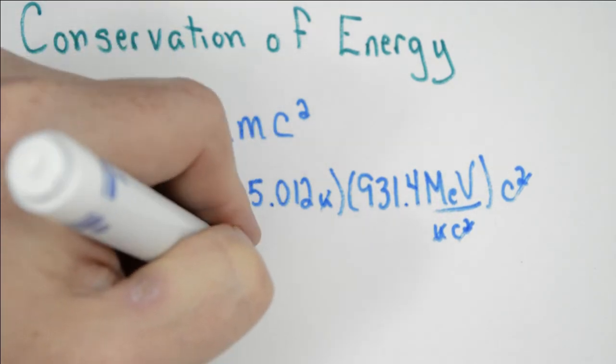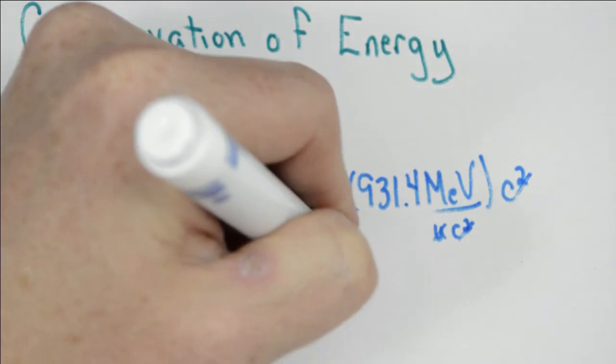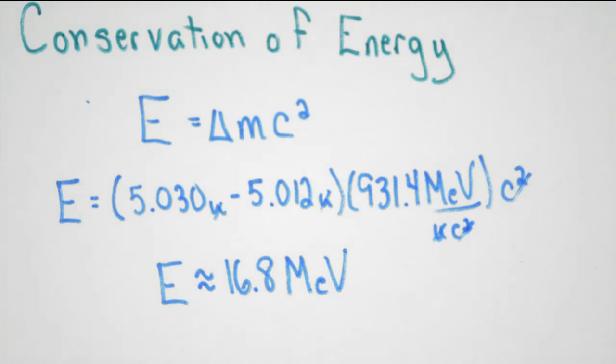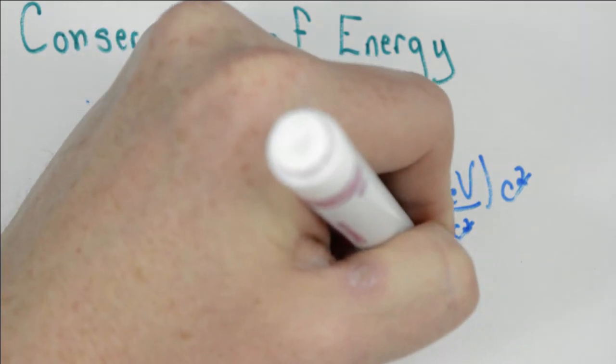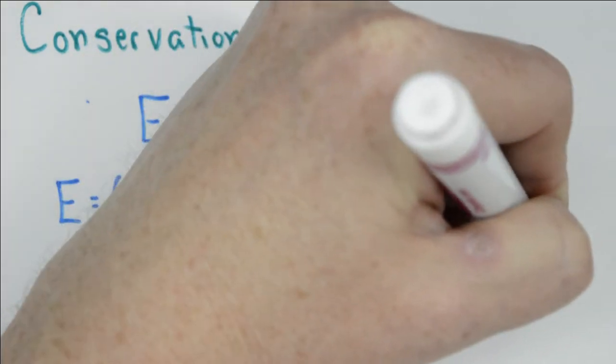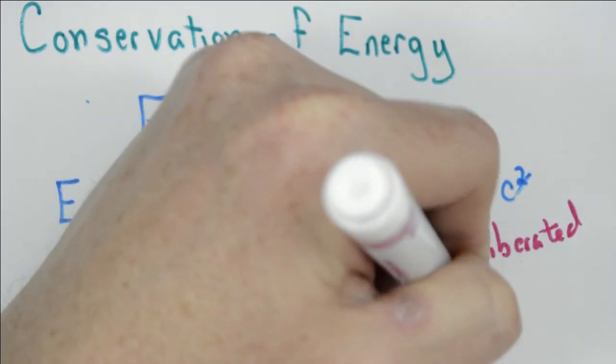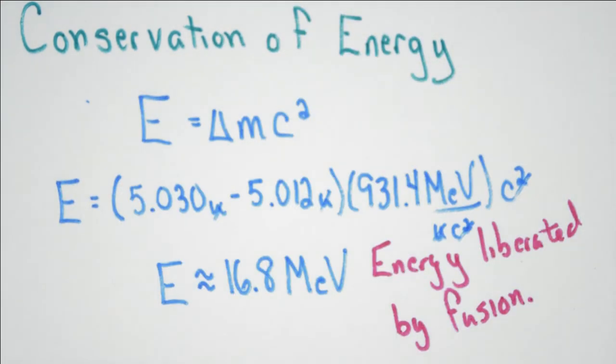And the energy that's released in this reaction is approximately 16.8 mega electron volts. And this is the energy that fuses all stars, at least in their early stages, and is the primary driver of our sun.